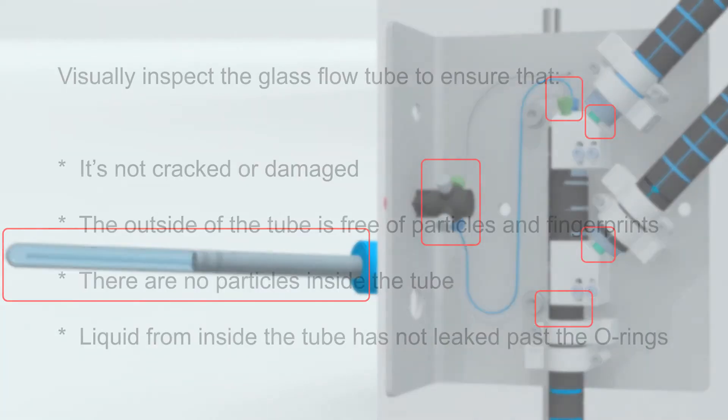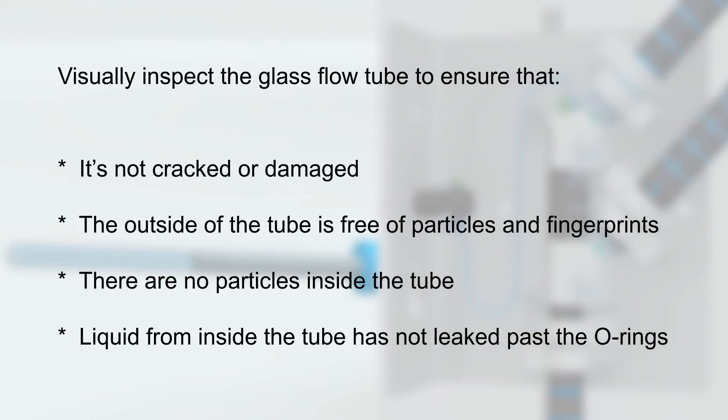Replace the glass flow tube and/or the O-rings if necessary. Then visually inspect the glass flow tube to ensure that it is not cracked or damaged, the outside of the tube is free of particles and fingerprints, there are no particles inside the tube, and liquid from inside the tube has not leaked past the O-rings.